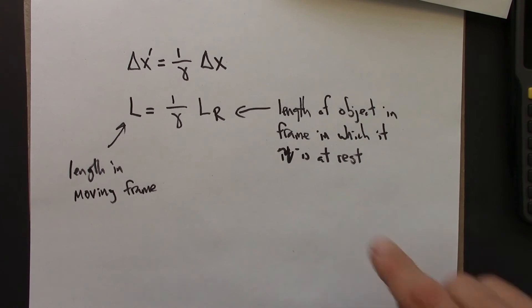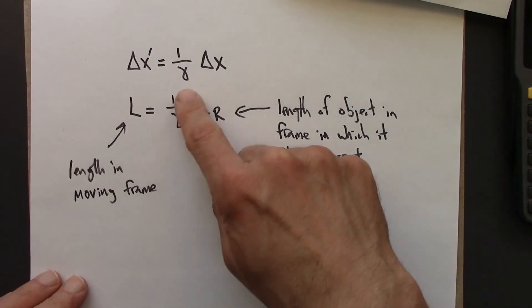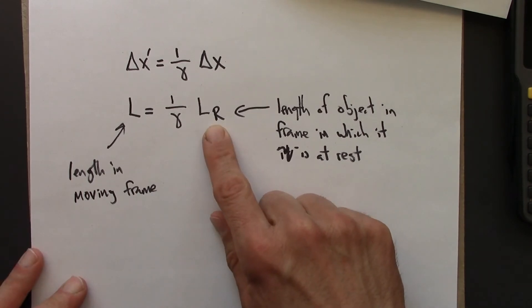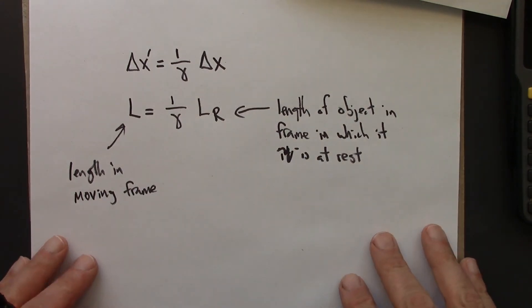So this is the Lorentz contraction formula. L in the moving frame. 1 over gamma. L_R the rest length. It is length in a frame in which it is at rest. And lastly, let me just write this in one other way.